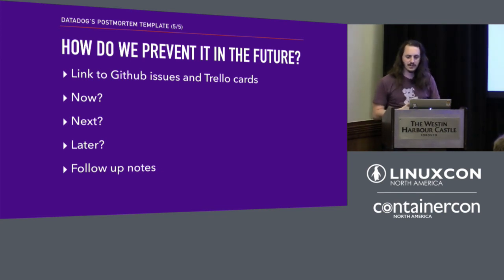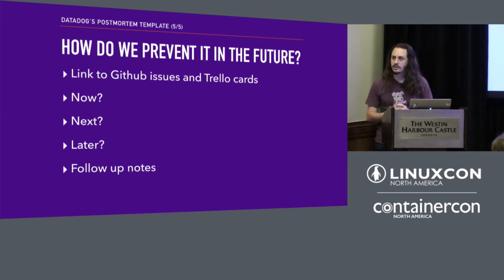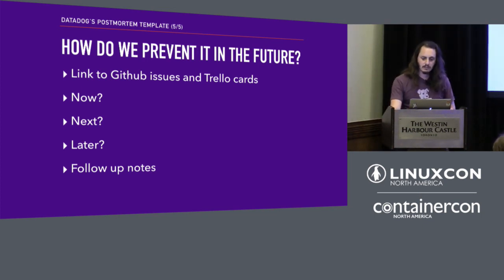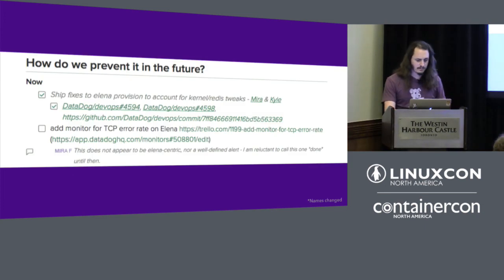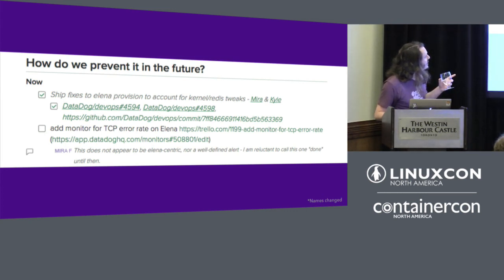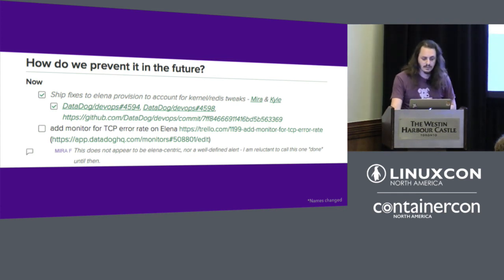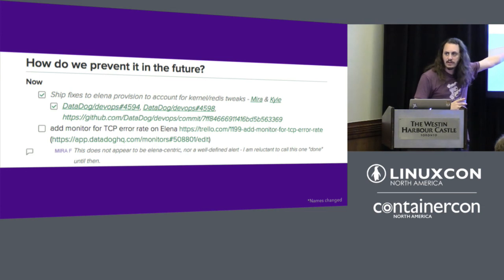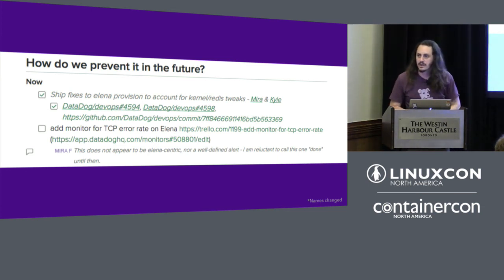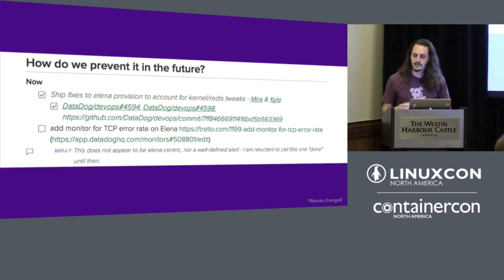Make sure your business owners are part of these conversations. They shouldn't feel blindsided when you add a bunch of now and next items and all the features they wanted aren't coming through. You need to have that conversation with the wider organization. Here's an example: we had tickets to add kernel and Redis tuning, with links to not only the tickets but also to the commits once done, so people could come back and see the learnings. We added monitors on TCP retransmits and error rates on that application. Even then, someone later said they didn't agree that was the right monitor and suggested something different — these continue to be a conversation, a continuous learning exercise.